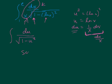So the antiderivative is inverse sine of u. And now we need to replace u with our x's. So u is equal to the natural log of x.